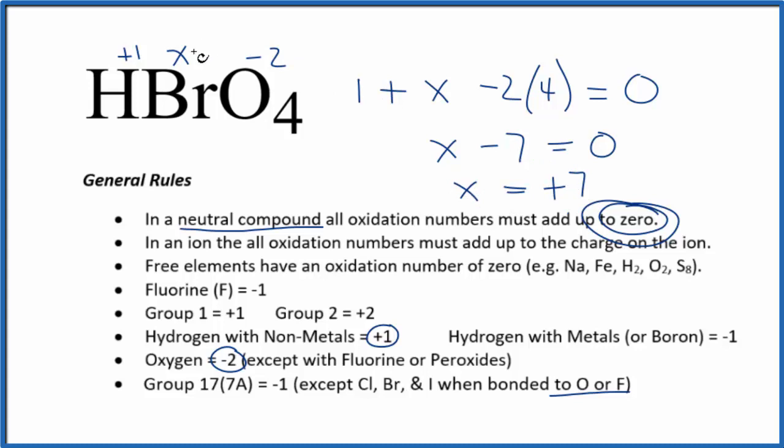And that's going to be the oxidation number for the Br here in HBrO4. If you multiply four times minus two, and you add that to seven and one, you'll end up with zero. It's a neutral compound.